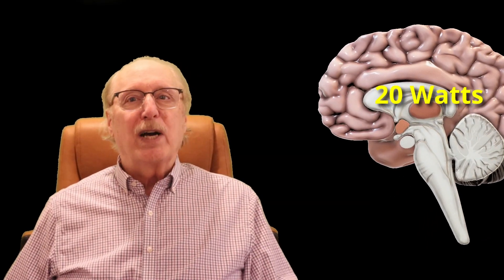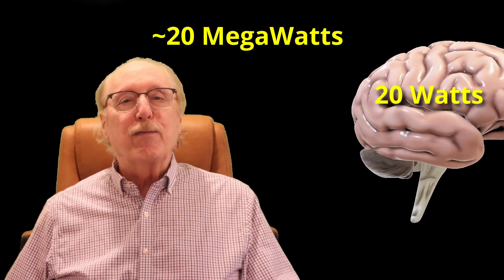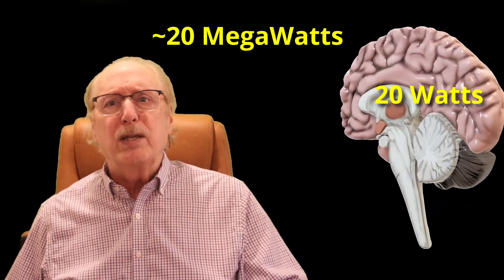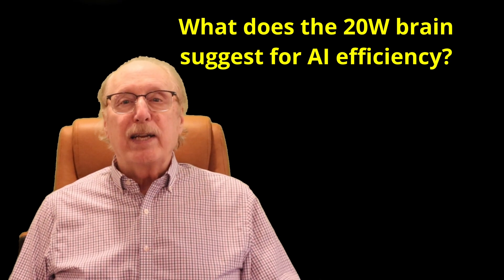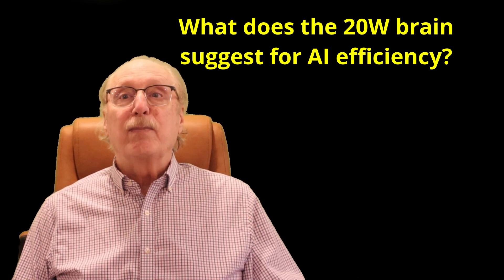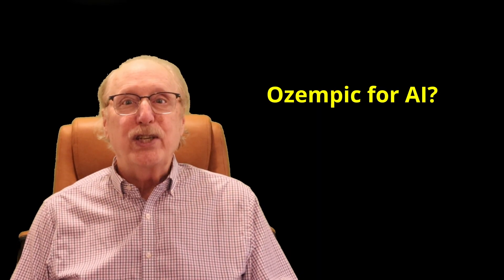Your brain uses only 20 watts of energy while an AI server farm might use a million times more. How do we account for this huge difference? And what can learning about the human brain and its graph-like information structure tell us about how to slow AI's voracious energy appetite?